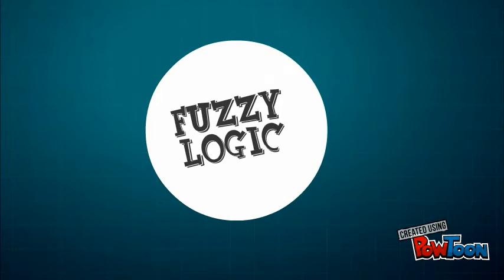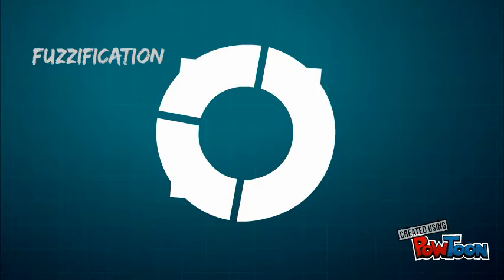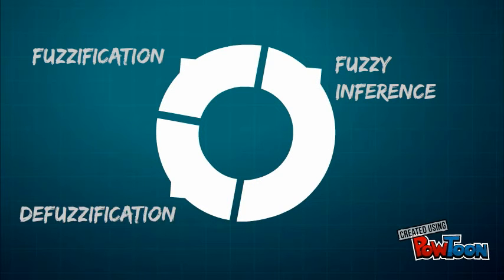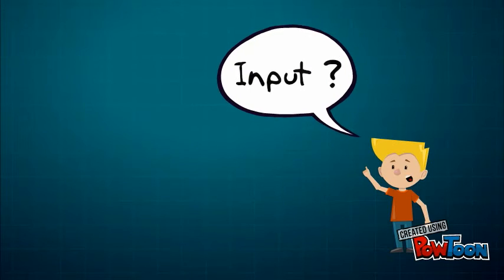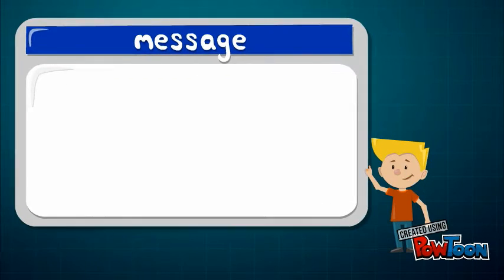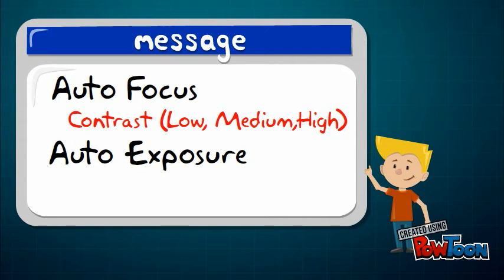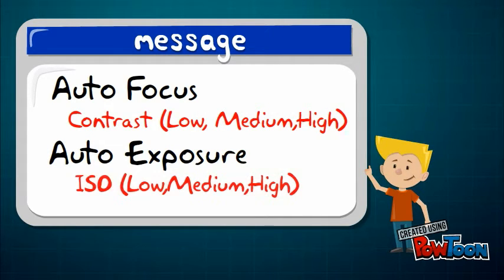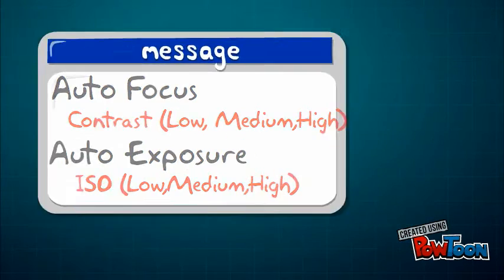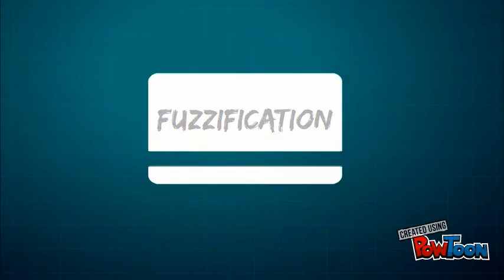In fuzzy logic there are three phases: fuzzification, fuzzy inference, and defuzzification. What is the input for camera? The input for autofocus is contrast, while the input for auto exposure is ISO.